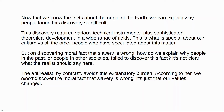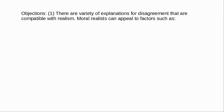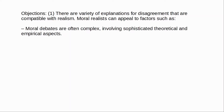Enoch's main objection to this argument is that there are a variety of alternative explanations friendly to realism which are just as plausible as the anti-realist explanation. So he thinks the anti-realist explanation is not the best explanation for moral disagreement. Enoch says that moral realists can appeal to a number of factors to explain disagreement. First, moral debates are often very complex — they involve sophisticated theoretical and empirical aspects. To take the example of slavery, it took so long to achieve a consensus because it required both empirical developments in biology, showing that all races are relevantly similar in terms of rationality and intelligence, and also theoretical developments concerning equality of rights.